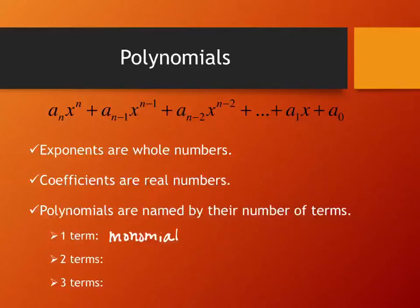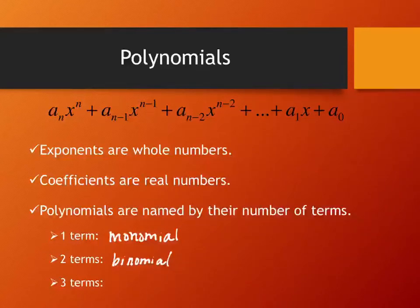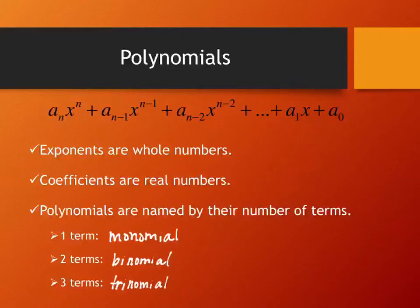If you have two terms, it's a binomial — bi means two, like bicycles or being paid bi-weekly. Three terms is a trinomial — think tricycle. Anything with more than three terms we'll just call a polynomial, though you could call all of them polynomials.